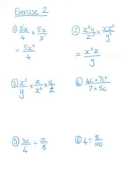Then we've got y, and we can see we've got y squared at the bottom, so we can do a bit of cancelling magic where y cancels with y squared to just give us y. Then after that, we've got z squared and z at the bottom, and once again we can do some cancelling magic.